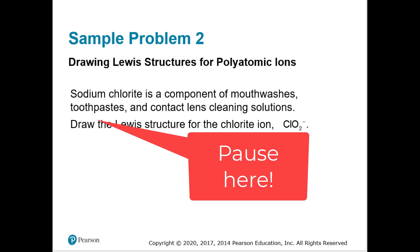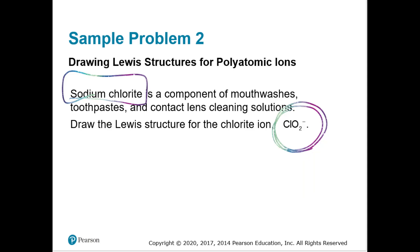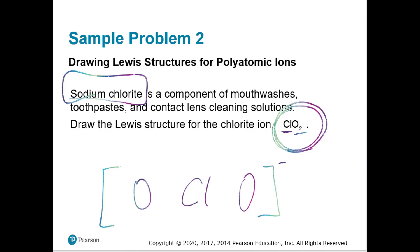Now draw a Lewis structure for sodium chloride — a component of mouthwashes, toothpaste, and contact lens cleaning solutions. The compound is ClO2 with a negative one charge. First, arrange the atoms: one chlorine and two oxygens. Since there's one chlorine, put it in the center with the two oxygens on either side, since electrons repel each other and the O's won't want to be close together.